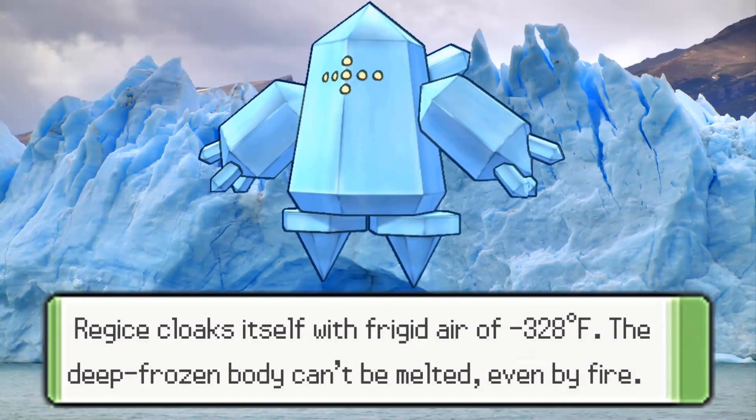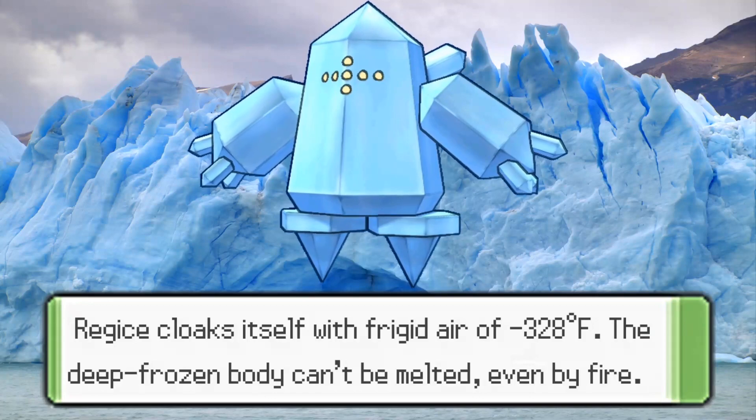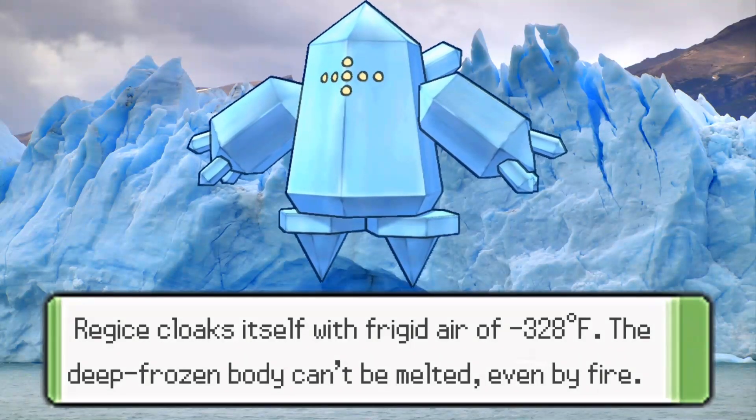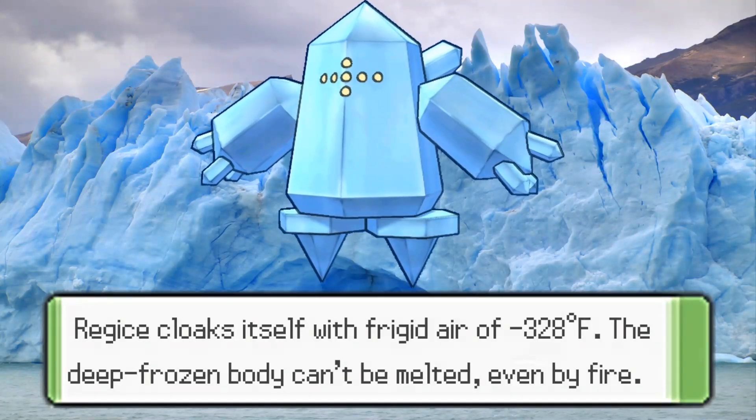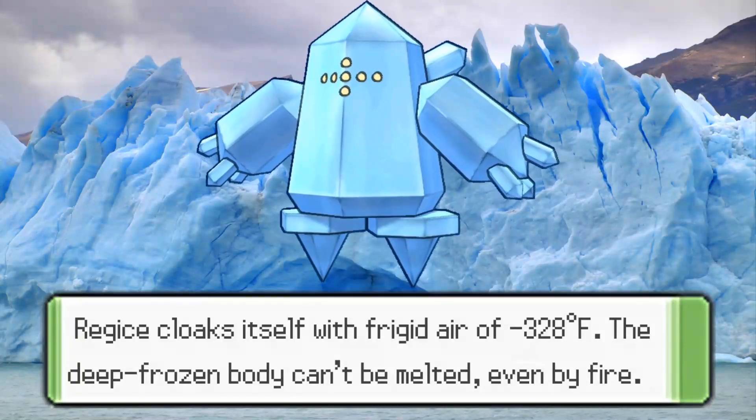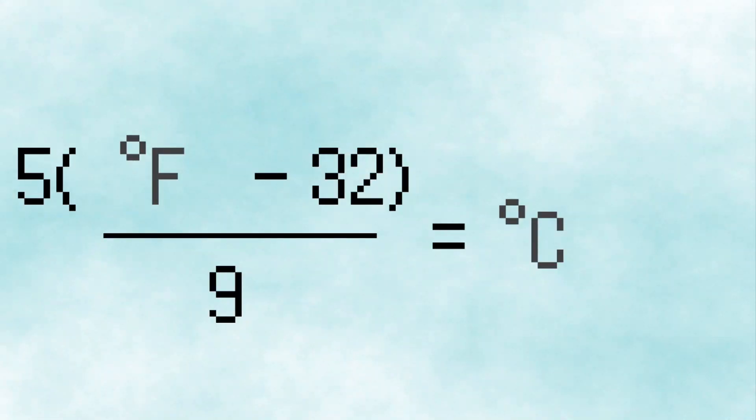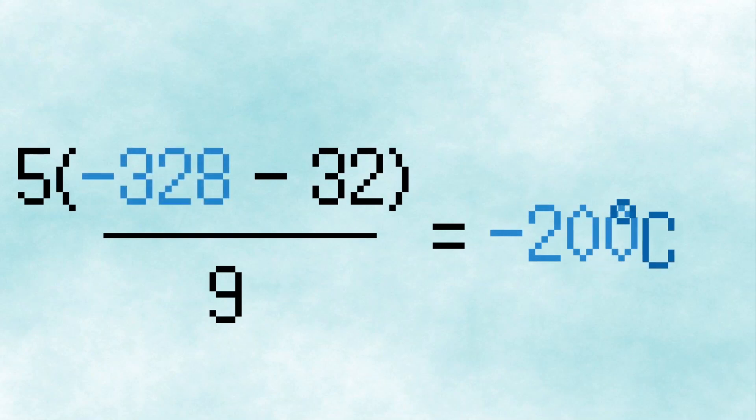The Pokedex tells us that Regice starts at negative 328 degrees Fahrenheit, so let's convert this to Celsius, since this is the unit most scientists use. Using this formula, I converted Regice's temperature of negative 328 degrees Fahrenheit to Celsius to get negative 200 degrees Celsius. The number for Regice's temperature seems kind of arbitrary in Fahrenheit, but it's a nice round value in Celsius.